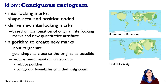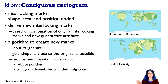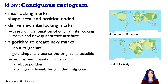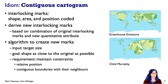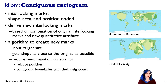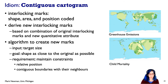There's a whole family of idioms called cartograms. For contiguous cartograms, we're basically distorting the base shapes according to some attribute. These are interlocking marks with shape, area, and position — we can't change any one of them independently. Instead, we derive an entirely new set of interlocking marks combining information from the originals with a new quantitative attribute. This must be done algorithmically in a global way: given a target size for the new quantitative attribute, you try to maintain the shape as close as possible to the original, preserving relative position between regions and keeping contiguous boundaries between neighboring regions.